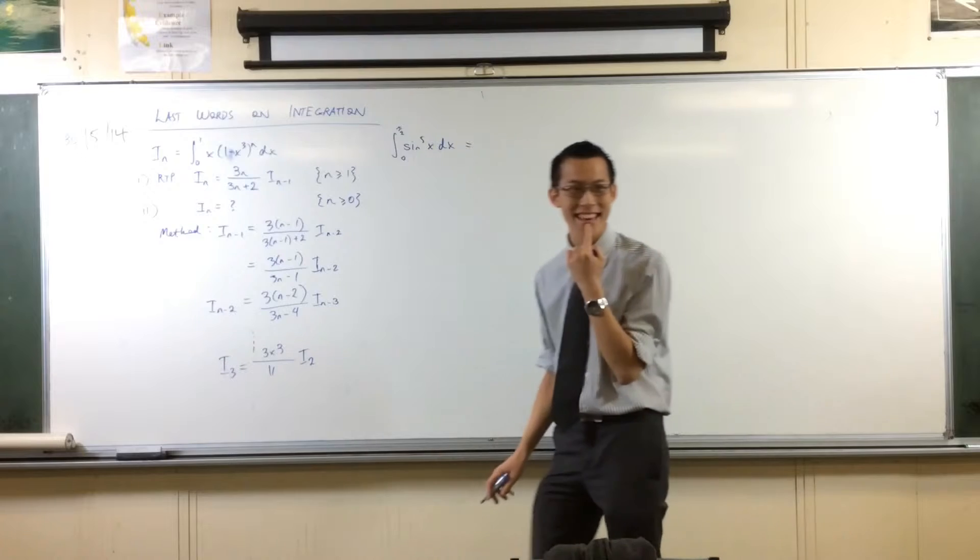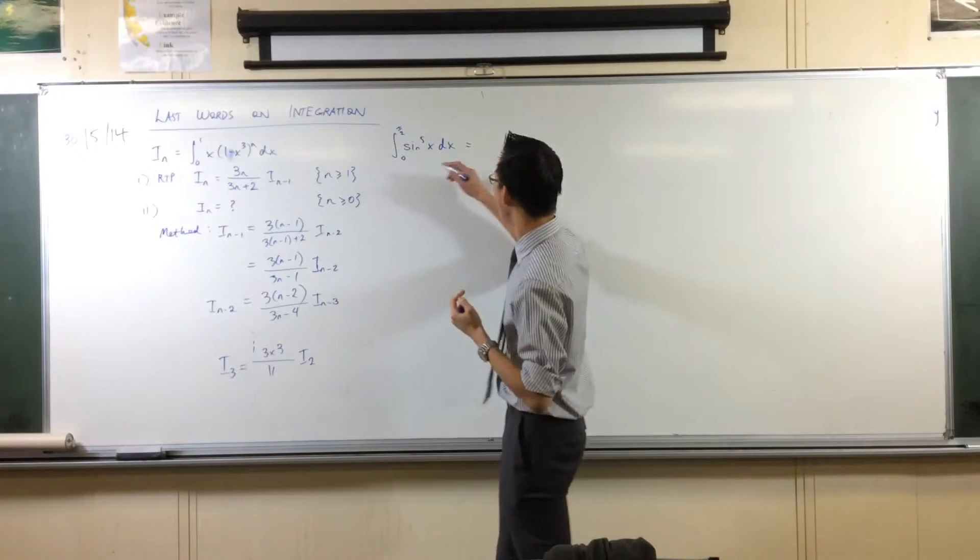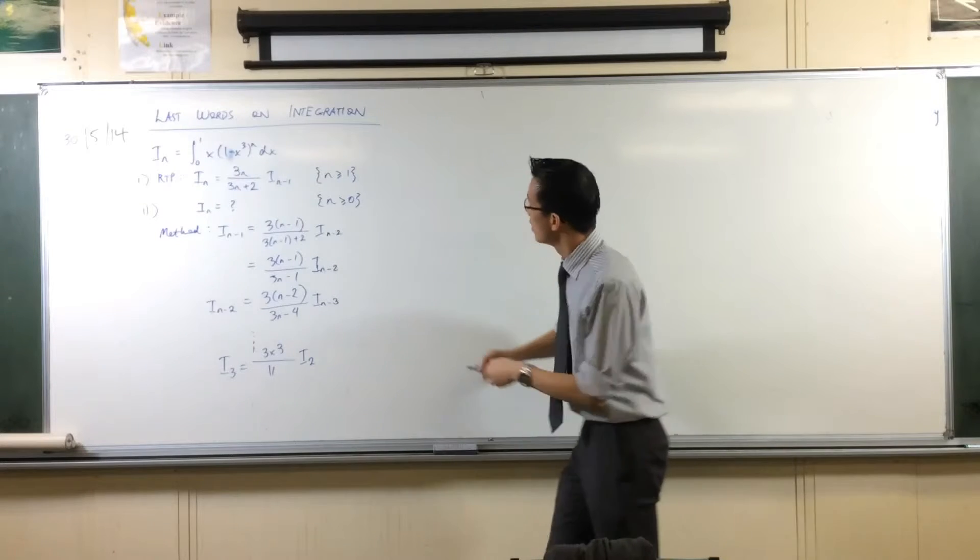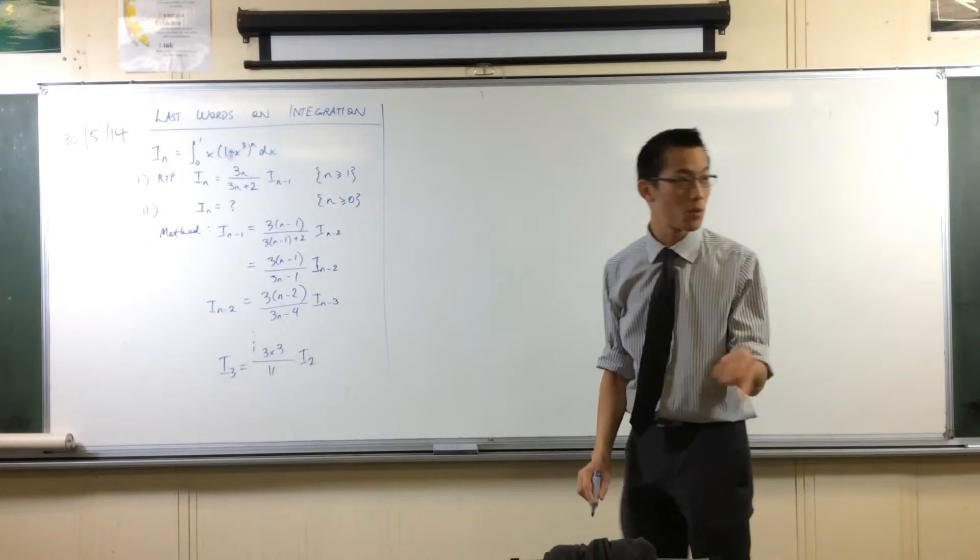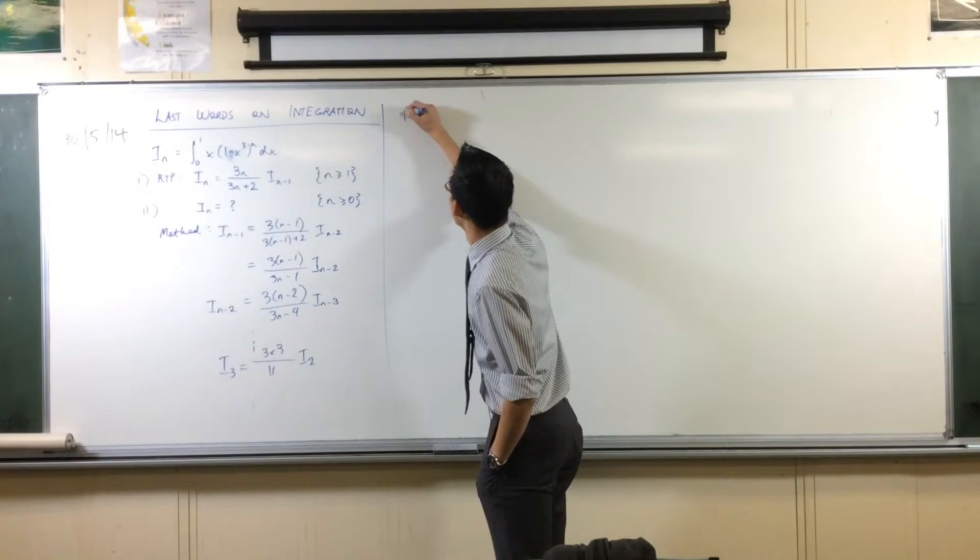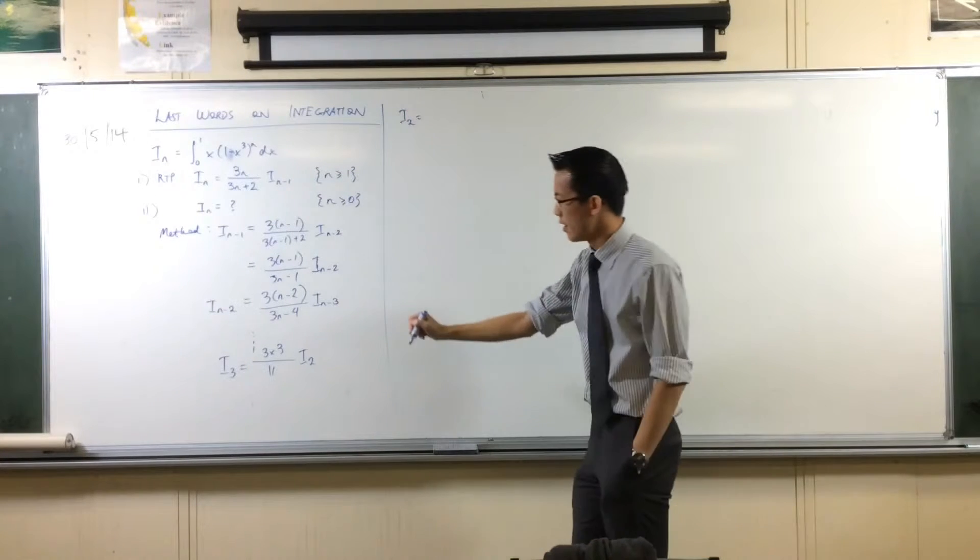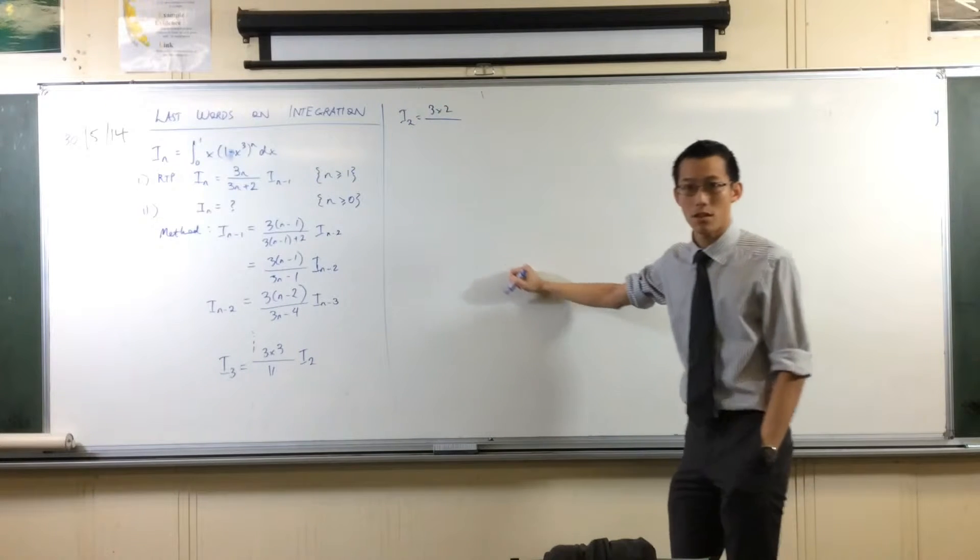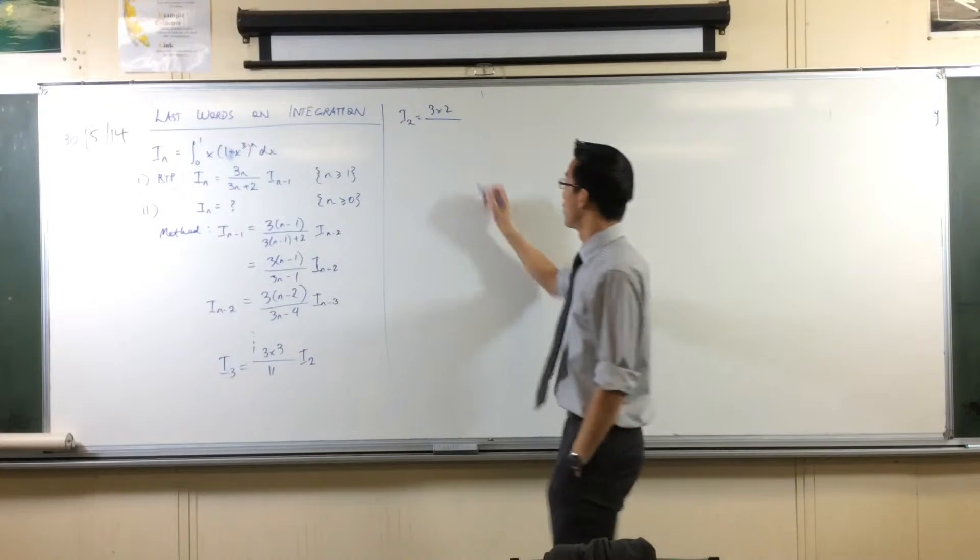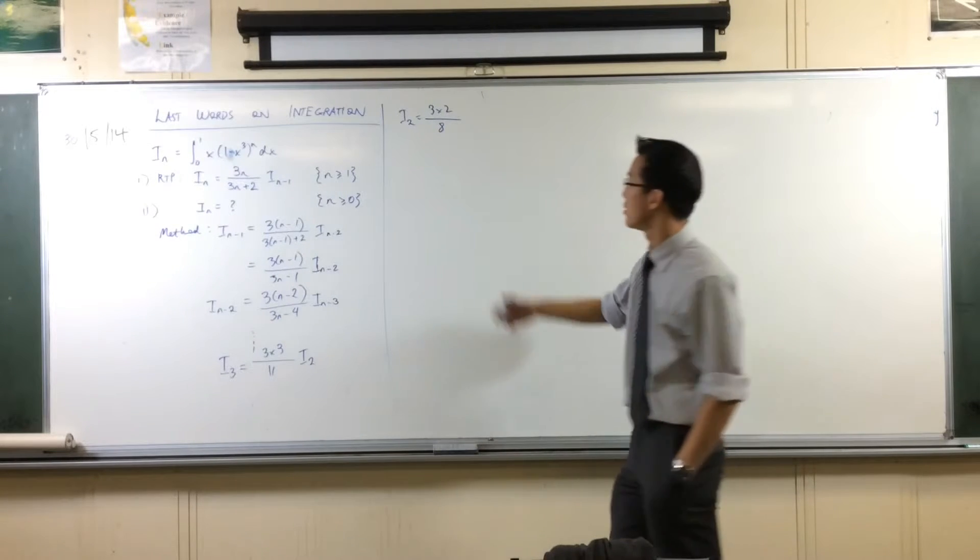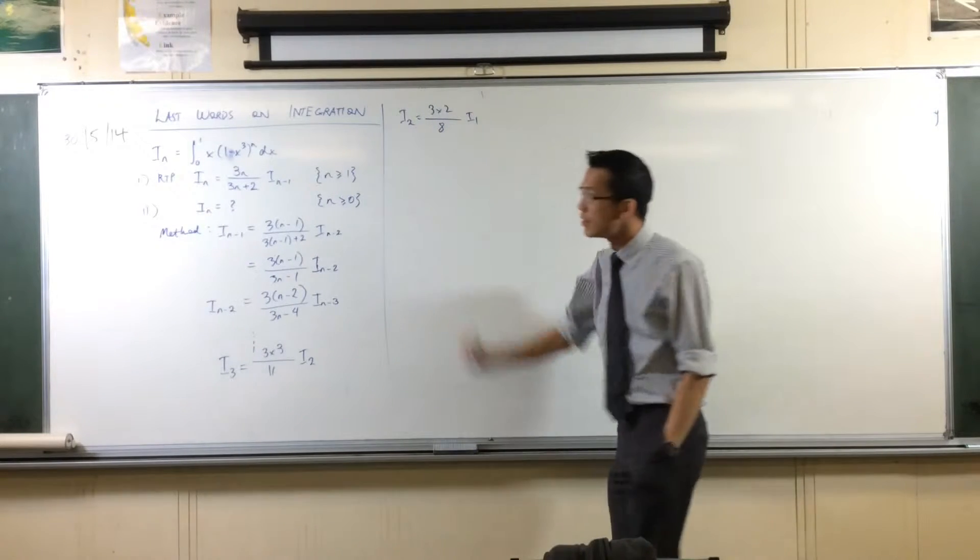On the top, you'll have 9. I'm just going to write that as 3 times 3, for the same reason I did before. What's on the bottom? 9 plus 2, that's 11, isn't it? Times I, and now I can see the end of the ladder. It's coming, isn't it?